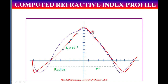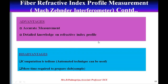From this graph it is noted that the profile of the sample fiber is a graded index profile. Advantages of the Mach-Zehnder interferometer: the measurement made will be accurate, and detailed knowledge of the refractive index profile is obtained. Disadvantages: computation is tedious in this method, and more time is required to prepare the sample slab.